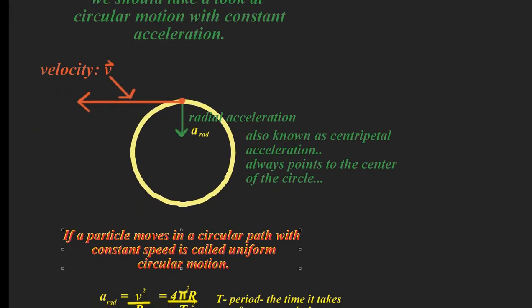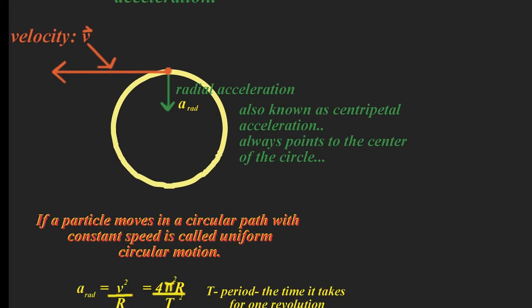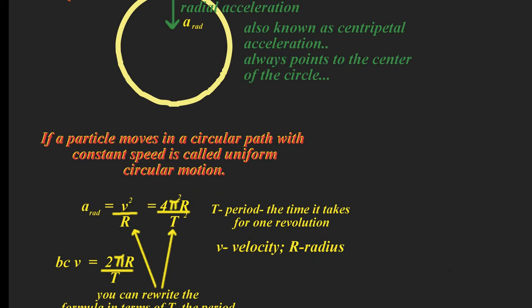Sometimes we look at problems that refer to uniform circular motion. What is uniform circular motion? That's if the particle is moving around at a constant speed. If we have a constant speed, then it's called uniform circular motion. And we can come up with this formula for radial acceleration, where it's the velocity squared over the radius.